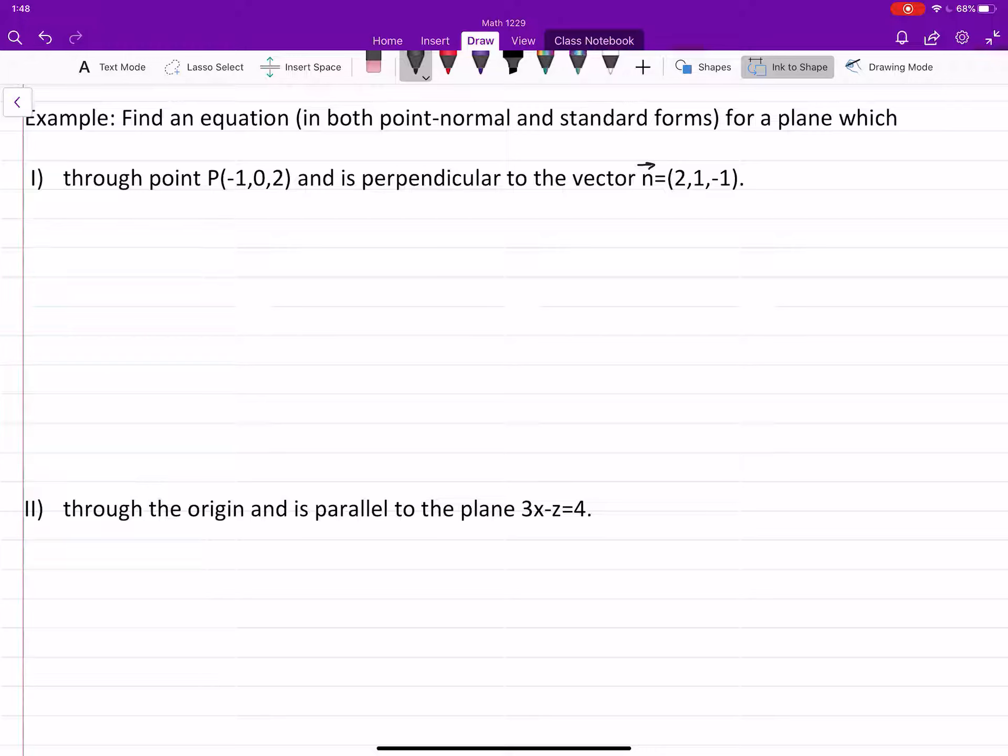First part says find an equation in both forms, point-normal and standard form, for a plane which is through point P(-1, 0, 2) and is perpendicular to the vector n=(2, 1, -1). Always remember you need n given here, p given here.